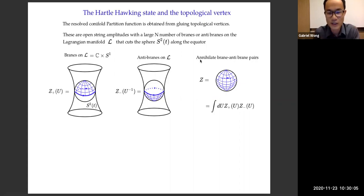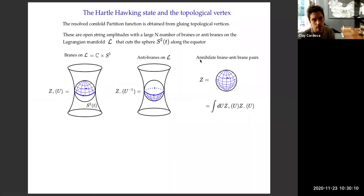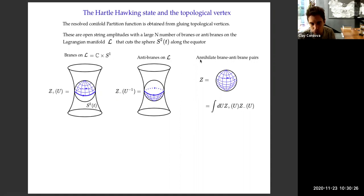None of us are doubting that your calculations will be self-consistent. What we're confused about is the interpretation. It just seems true that you don't have access to the entire string Hilbert space. So it seems hard to argue that you'll be able to reproduce the full entanglement entropy.